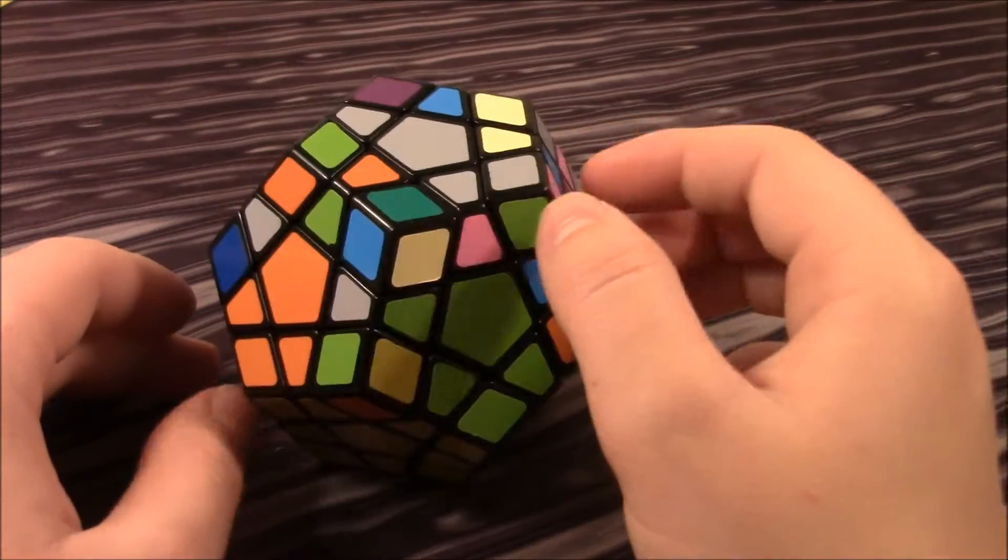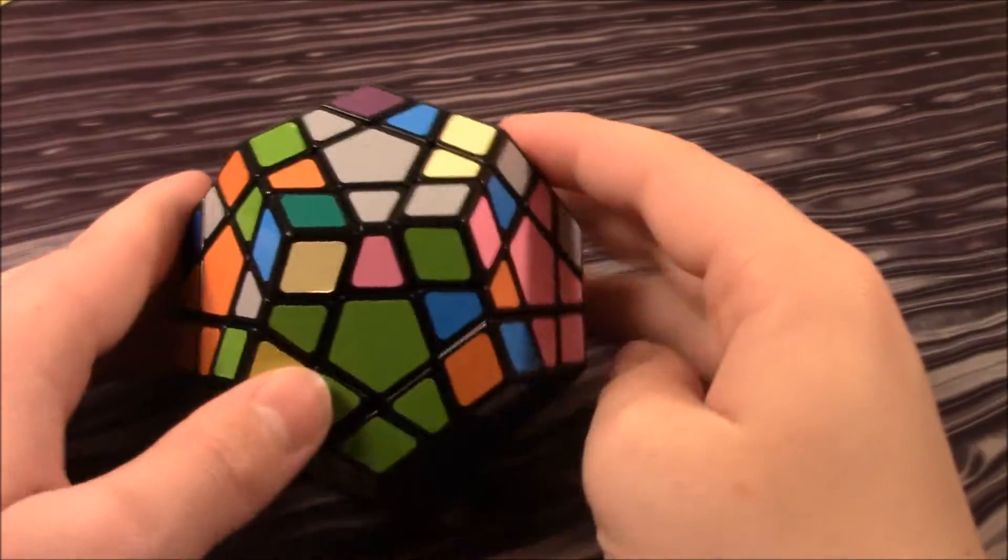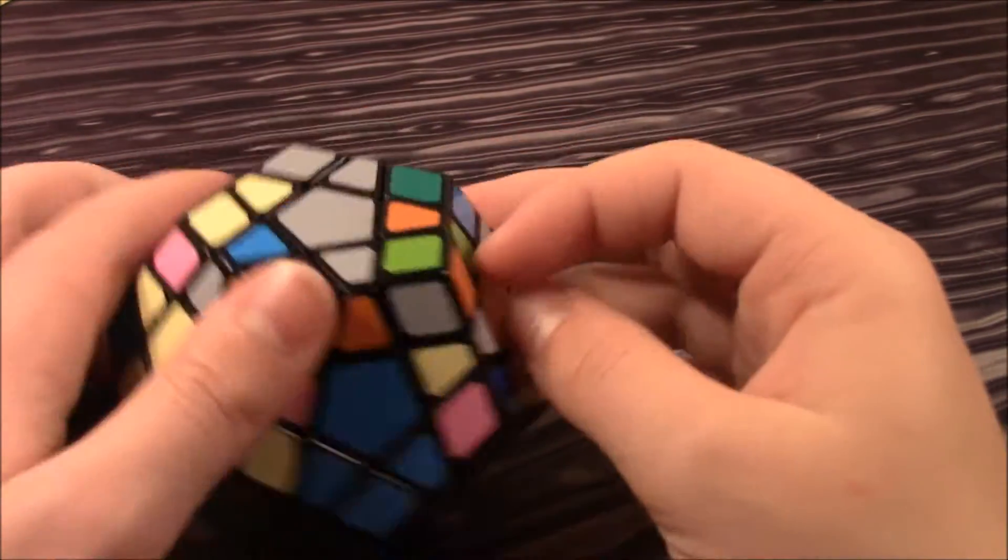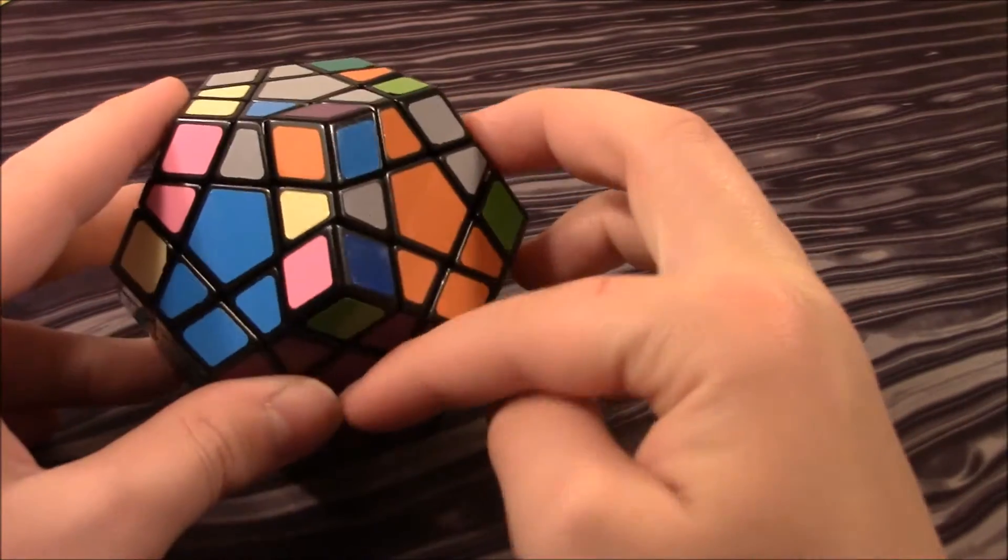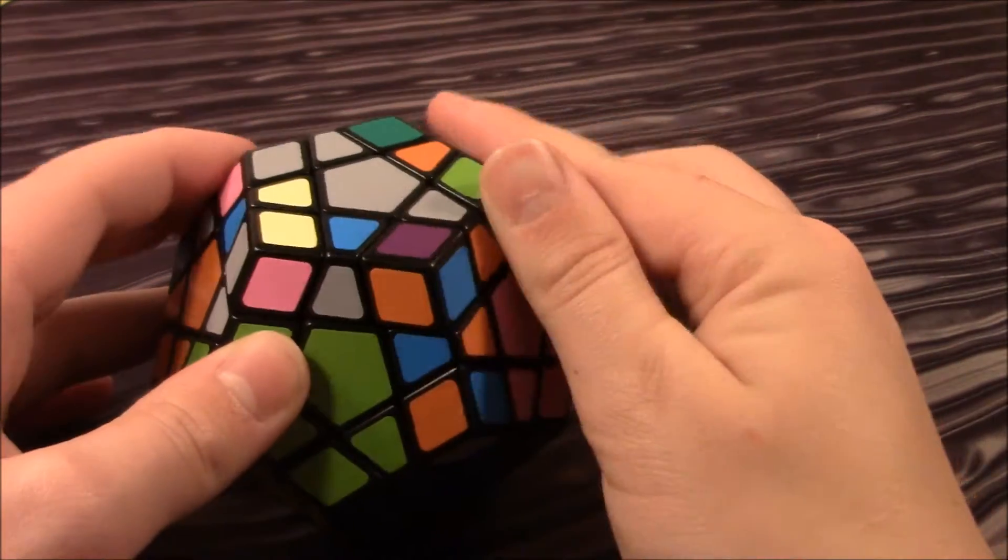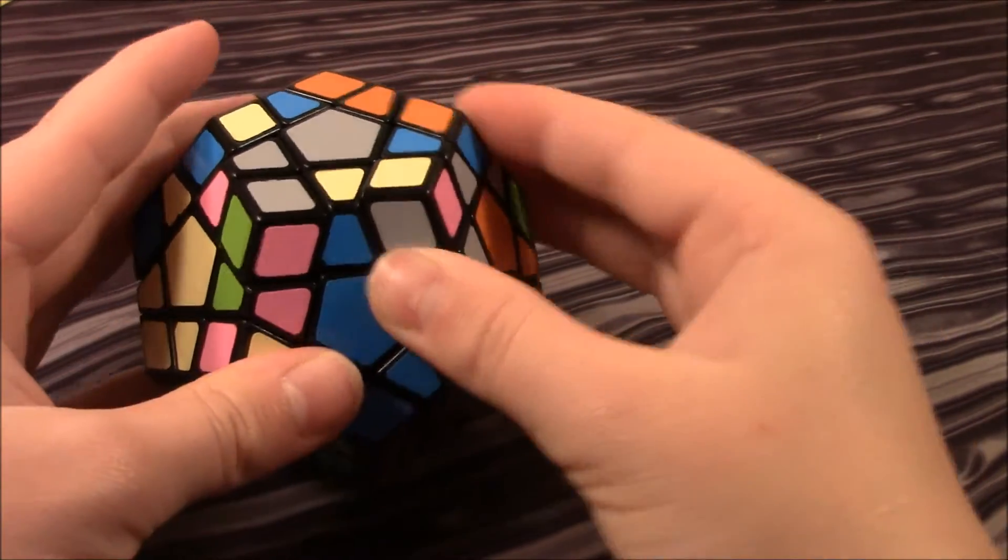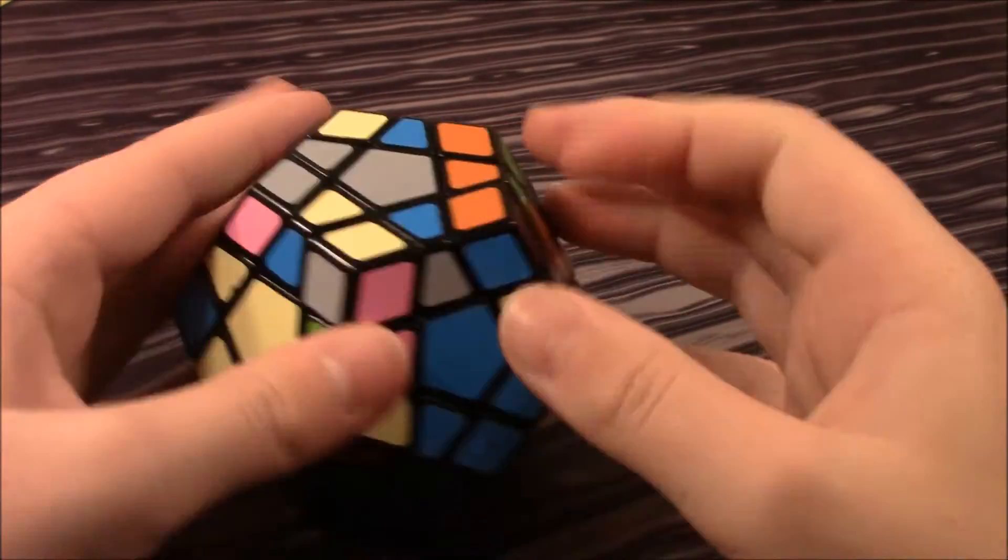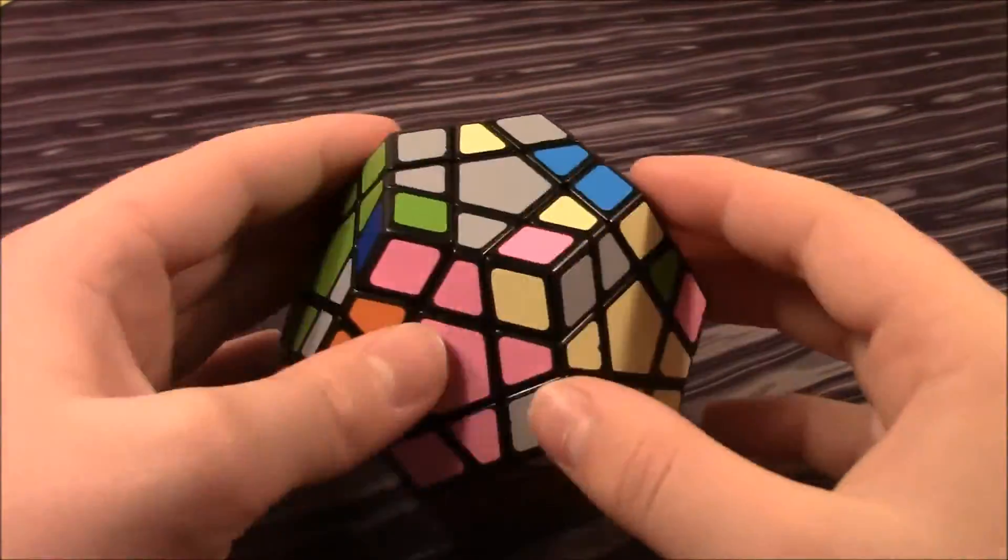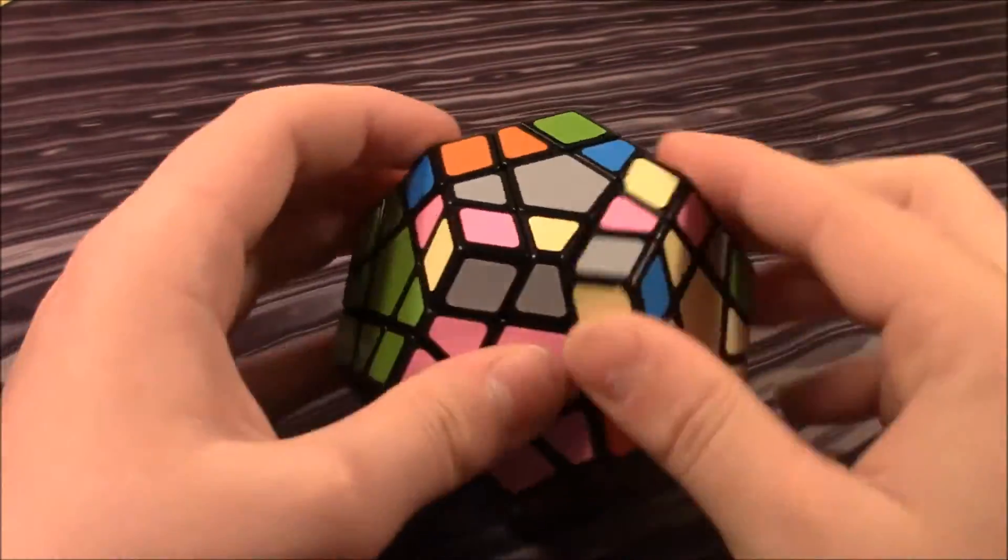So now we are on to our last five F2L pairs, which is here, here, here, here, and here. So let's just go ahead and start with this pair. It goes in here. Purple is facing up. So the edge is over here. Let's see if I can just do that. And I can do sexy move times two. Move it over here. It'll cooperate. And then just easy insert.